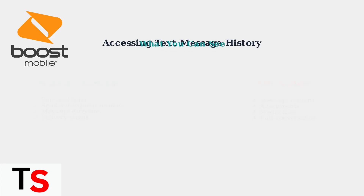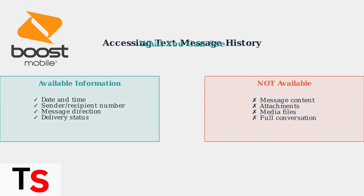It's important to understand what information you can and cannot see. Boost Mobile shows you message details like date, time, and who sent or received the message, but the actual message content is not displayed to protect your privacy.